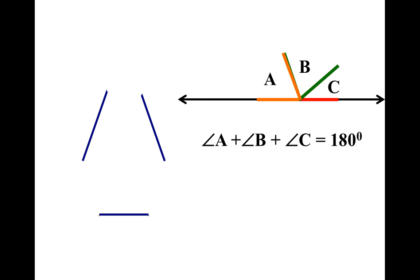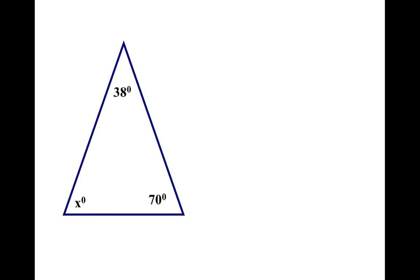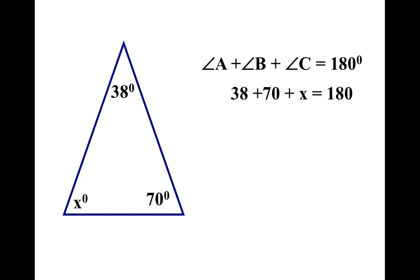So how can we use this information? Well, just like with supplementary angles, what if I had some numbers? Could I figure out what the missing number is? Sure, because these three angles add up to 180 degrees. So 38 plus 70 plus x equals 180 degrees. Combine those numbers together, and then subtract. You find out that the missing number is 72 degrees.